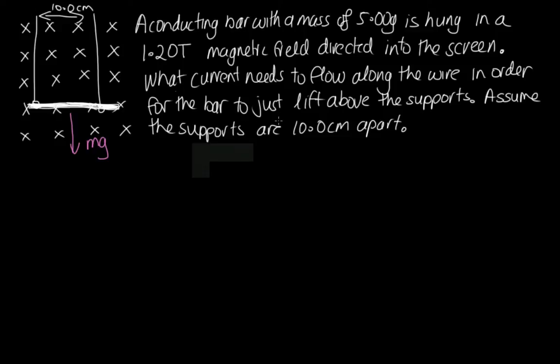It's going to just lift above the supports when we have an upwards force, which can balance this weight force. What is going to cause such an upwards force? Well, if we've got a current flowing through a magnetic field, it will be the F equals BIL sine theta force. So this tells us that the BIL force is going to need to be directed upwards.